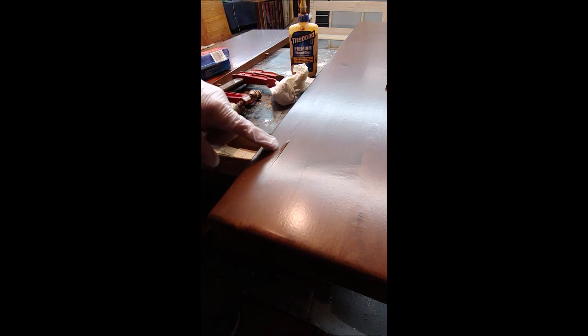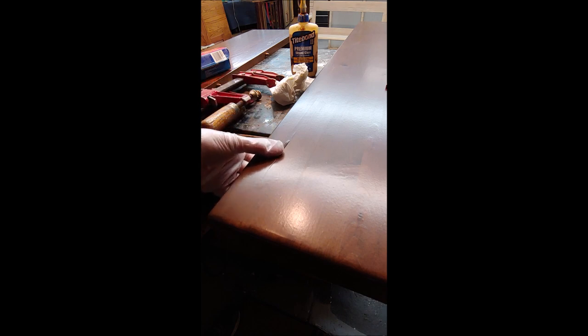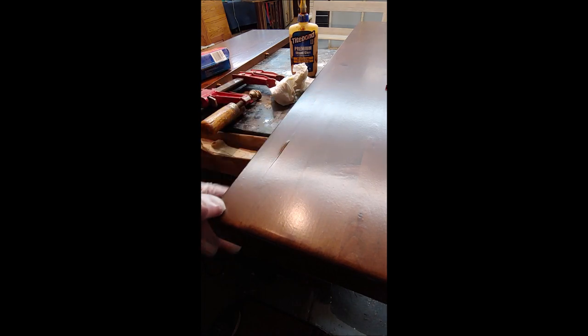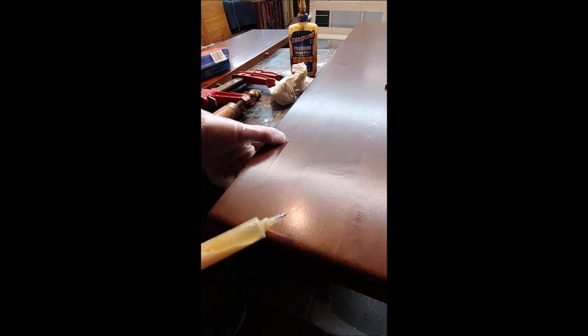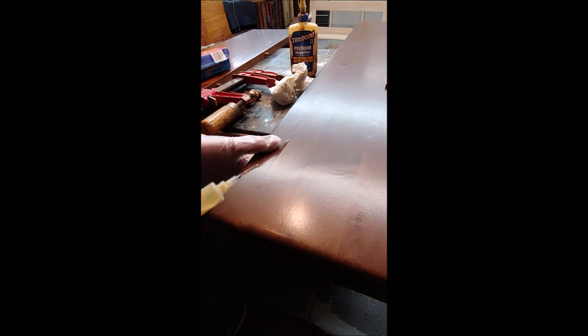So this one, you see on this table leaf we've got the split. I didn't even realize to be honest with you that this was veneer. It's pine, right? So usually you think of pine as being solid wood, but not in this case. So I've got this split right here.